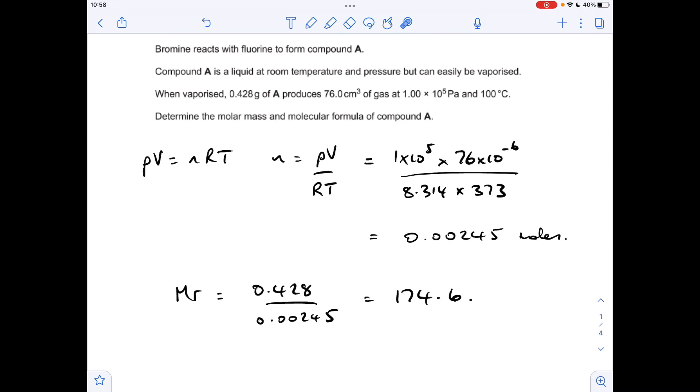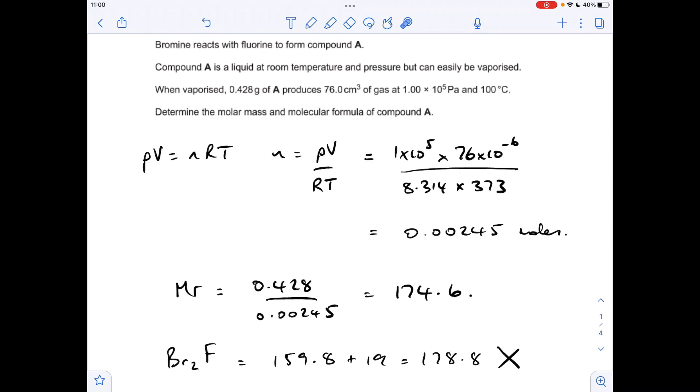So the first thing we'll look at is what if there was two bromines in. So the MR of two bromines is 159.8. So we're under the 174.6. So we'll put a 19 on for a fluorine and we've gone past. So it can't have two bromines in. It must only have one.